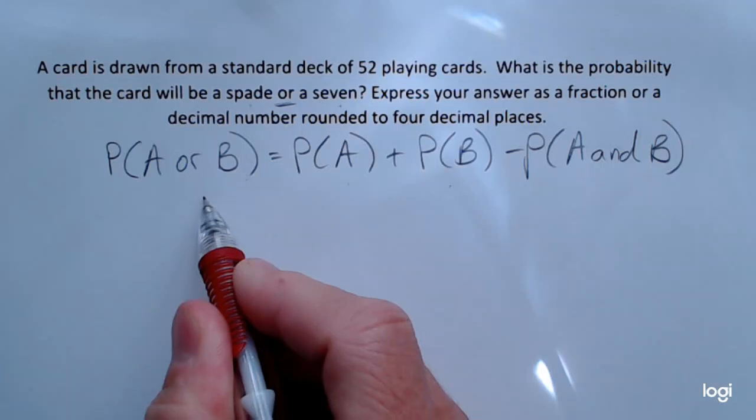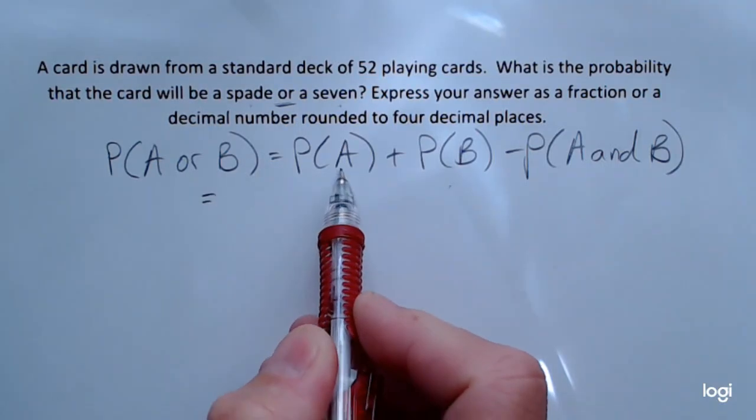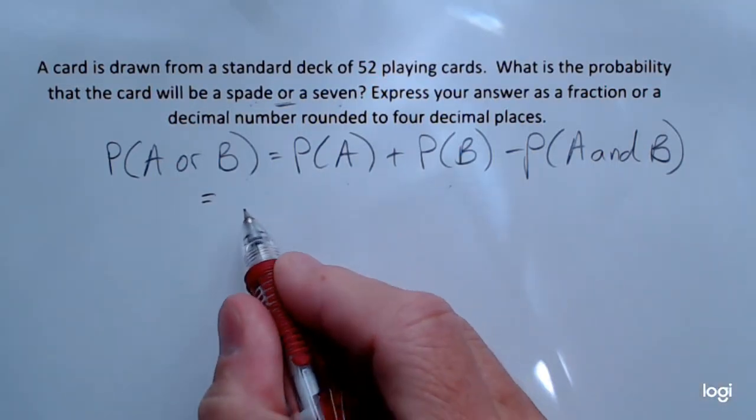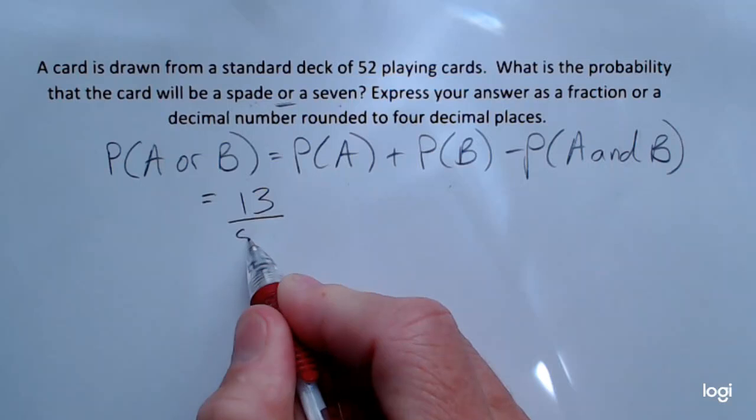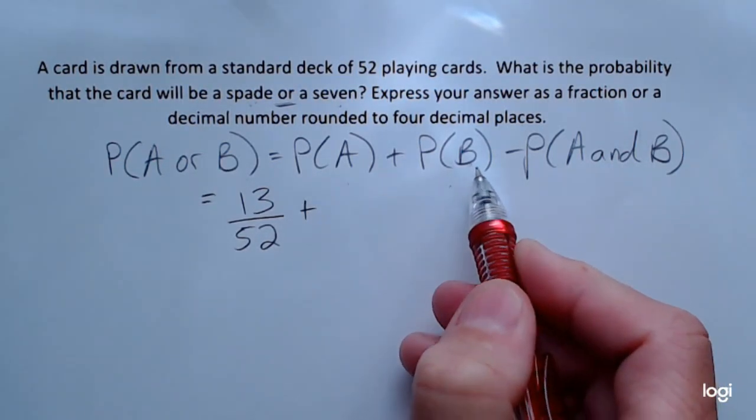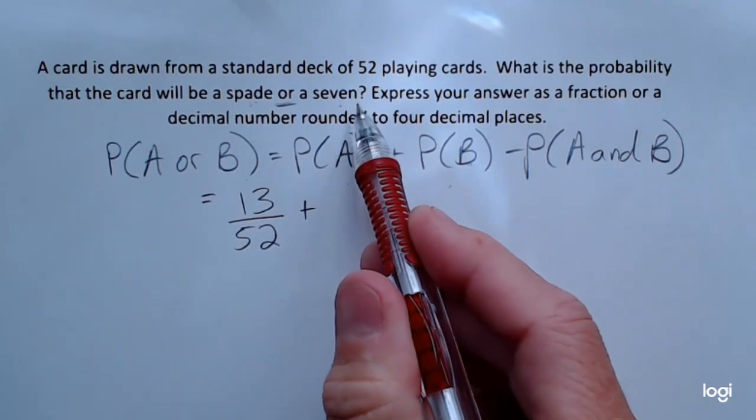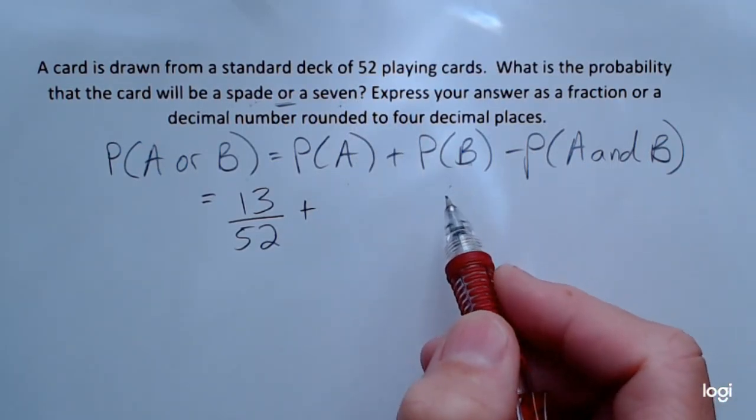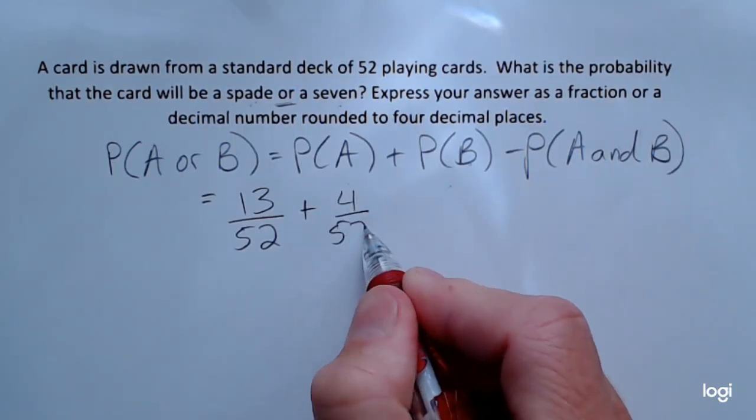Plugging into this formula, where my event A will be getting a spade, there are 13 spades in a deck of 52 cards, so that's going to be 13 out of 52, plus the probability—we'll let event B be getting a seven. There are four sevens in a deck of cards, one for each suit, so there's 4 out of 52.